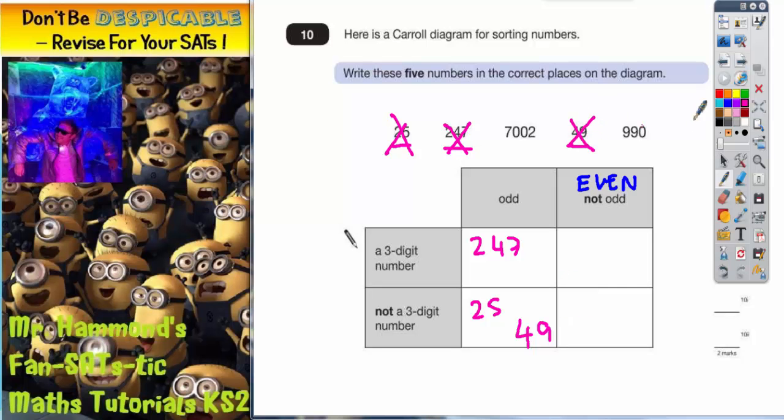Now there are only two numbers left to do. So these are the ones that are not odd. In other words, even numbers. So 7002 is even, 990 is even.